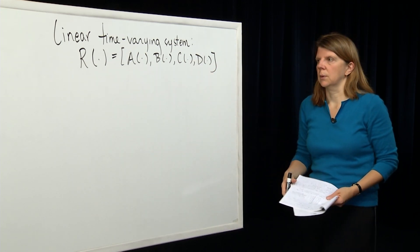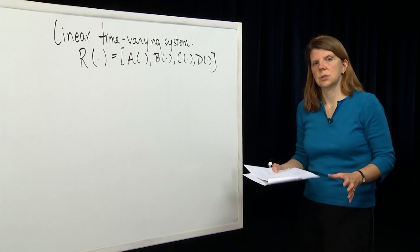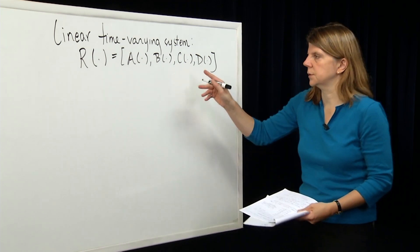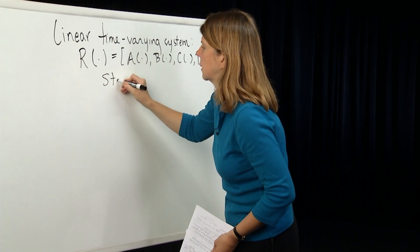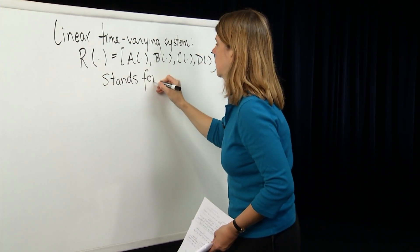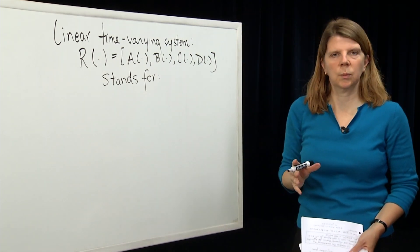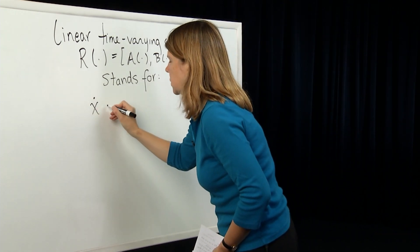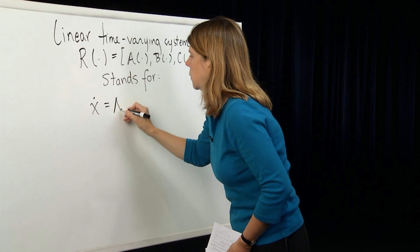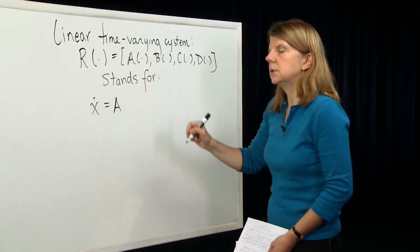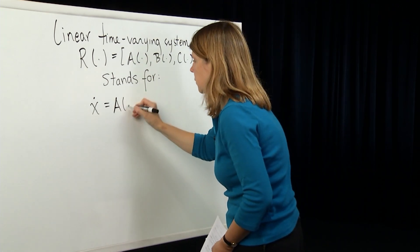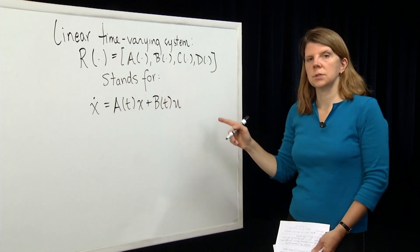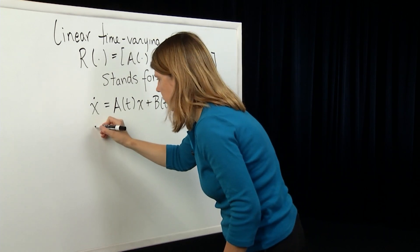This notation refers to a differential equation and an output equation, which further define the dynamical system. This is typically what people call the state space representation of a system. The A and B matrices come into the differential equation describing the system evolution, and the C and D matrices come into the output equation, or the readout map.